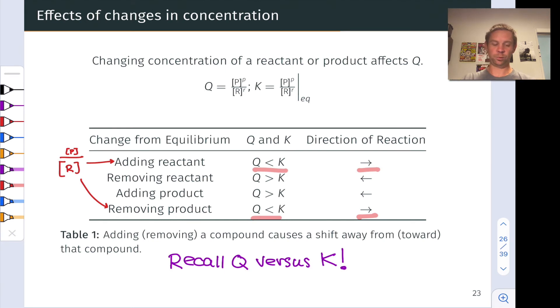If we started with Q equal to K and we added reactant, enlarging the denominator, Q is necessarily less than K in this situation. As we've seen previously in comparing Q versus K, this means the reaction will go forward spontaneously. The removing product row, the fourth row of this table, is exactly what we saw in this simulation.